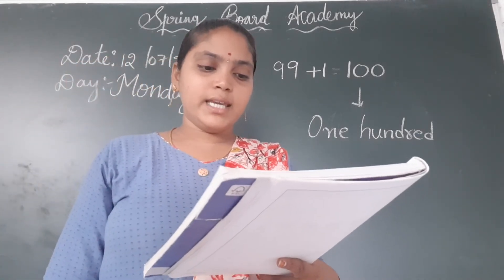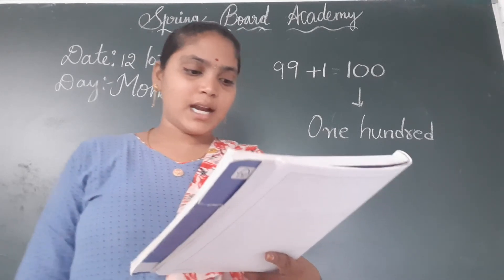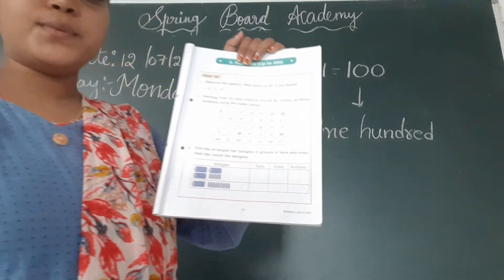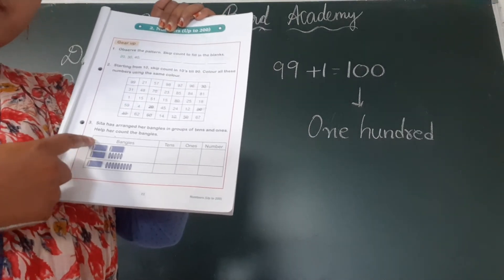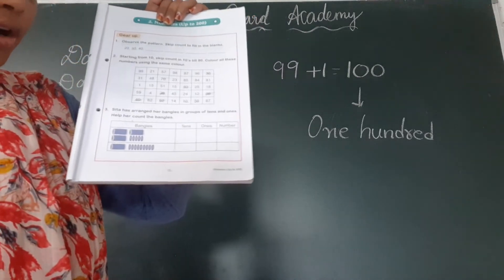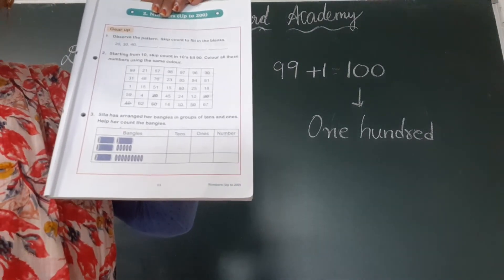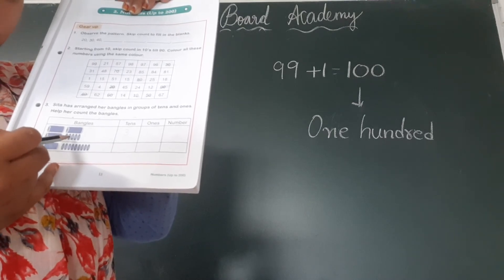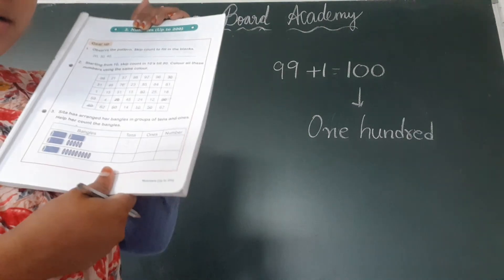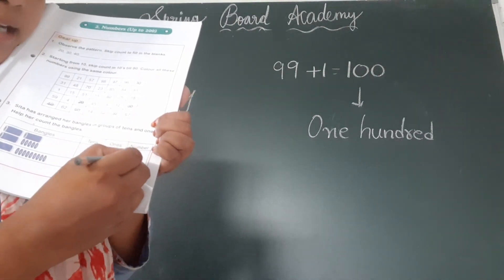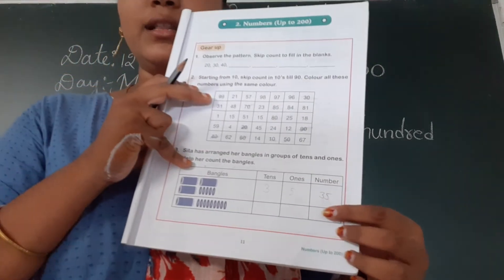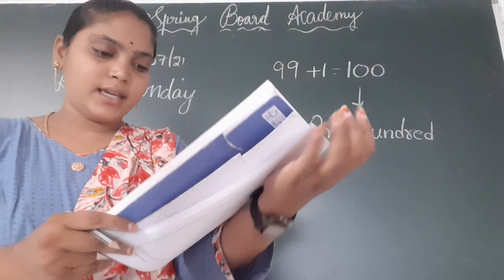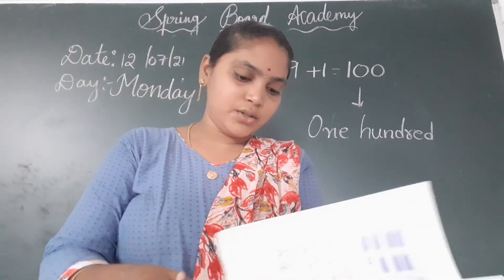Next, third one: Sita has arranged her bangles in groups of 10s and 1s. Help her count the bangles. This is a group of 10 bangles. Count how many 10s are here: 1, 2, 3 — so 3 tens. Write 3. And how many 1s? 1, 2, 3, 4, 5 — so 5 ones. Total how many bangles? 3 tens and 5 ones is 35 bangles.